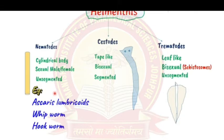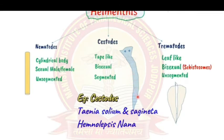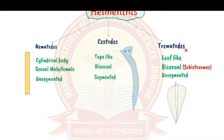Cestodes have a tape-like, flat structure — like a cello tape. An important feature of cestodes is that they are bisexual, meaning both male and female reproductive organs are present in a single parasite. Cestodes are also segmented — you can see segments in the parasite.